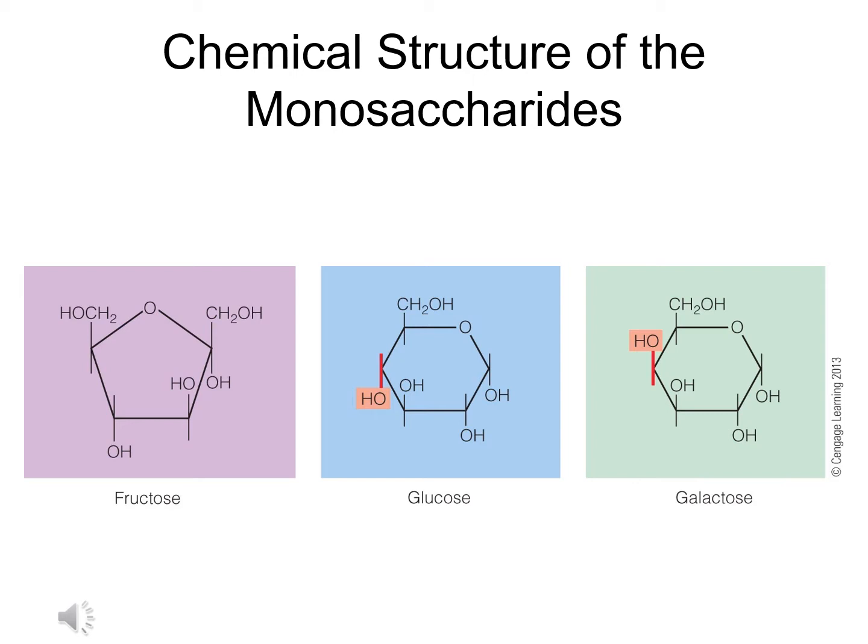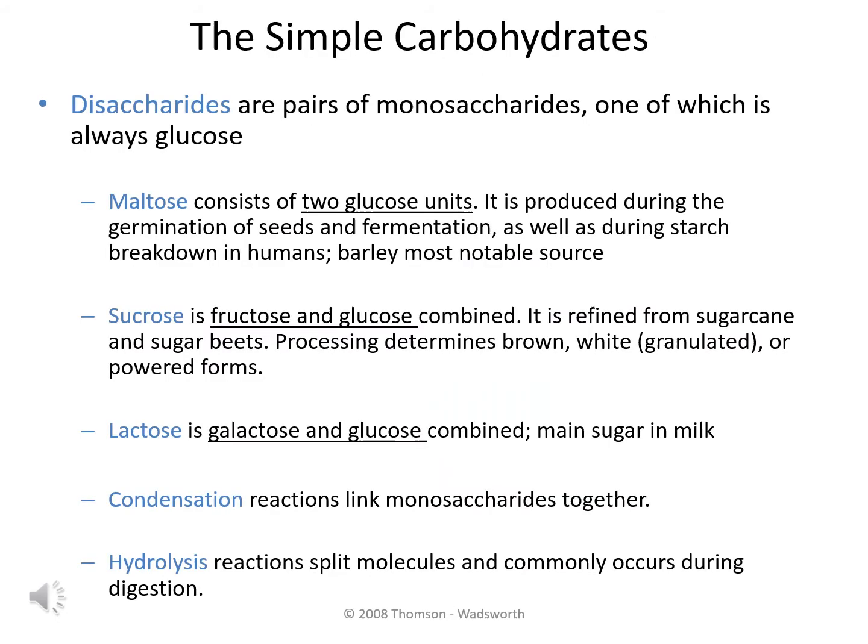The arrangement of fructose stimulates the taste buds to produce a very sweet sensation when we consume a food which contains fructose. The second category of the simple carbohydrates are the disaccharides, which are two monosaccharides linked together. One of these monosaccharides is always going to be glucose.